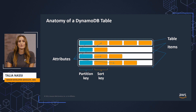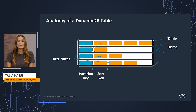DynamoDB supports two different kinds of primary keys – a simple primary key and a composite primary key. Simple primary keys are composed of just one attribute – the partition key. A simple primary key allows you to fetch only a single item at a time, and it works well for one-to-one operations where you're only operating on individual items.